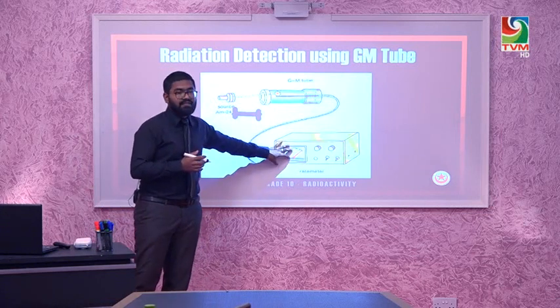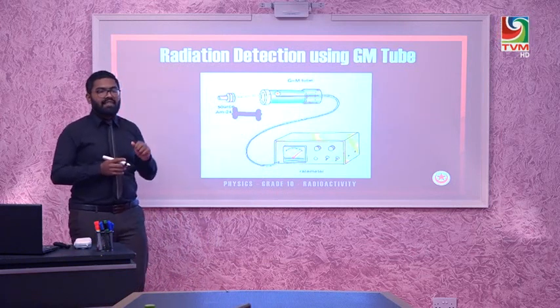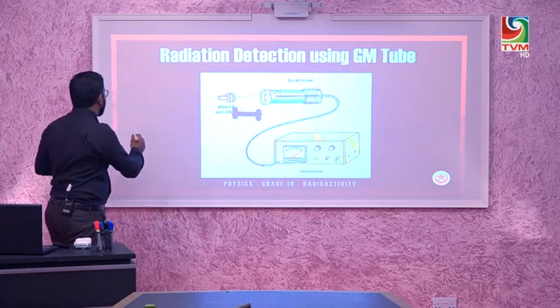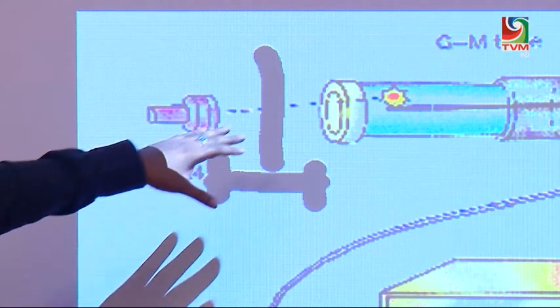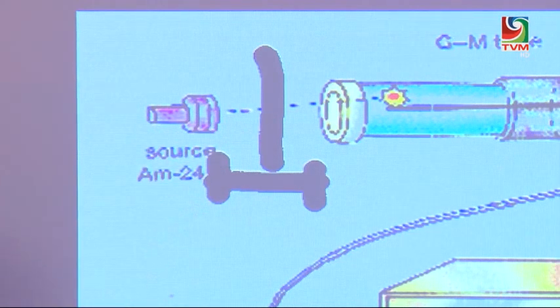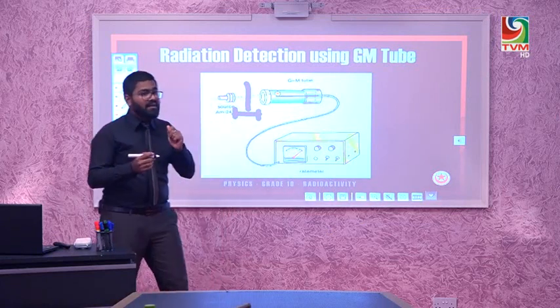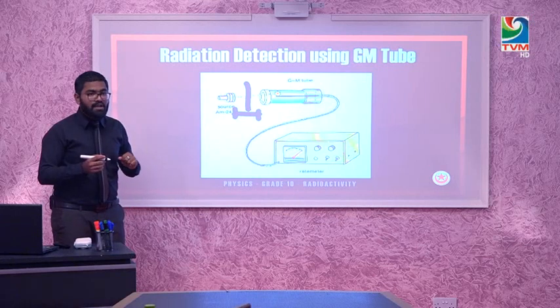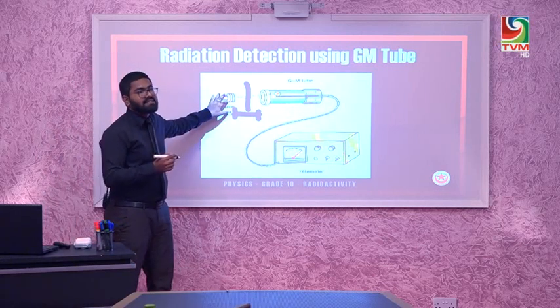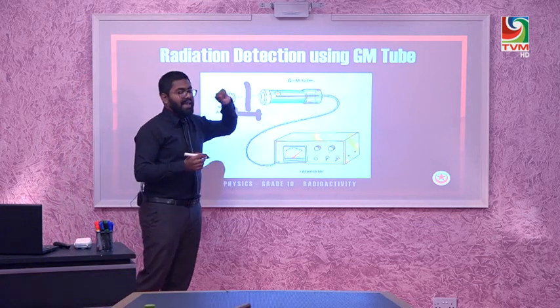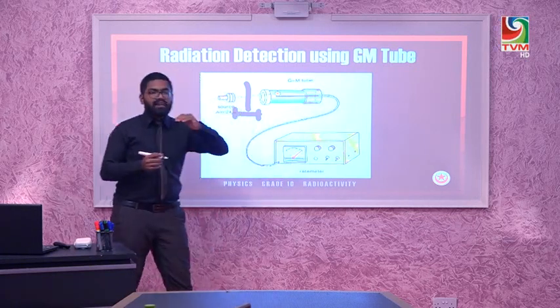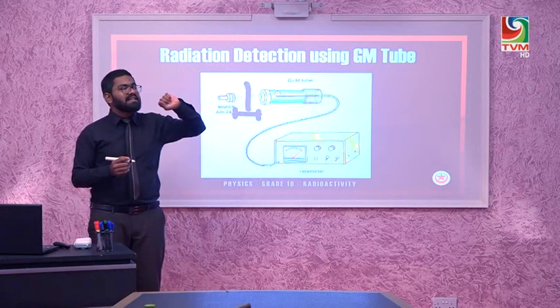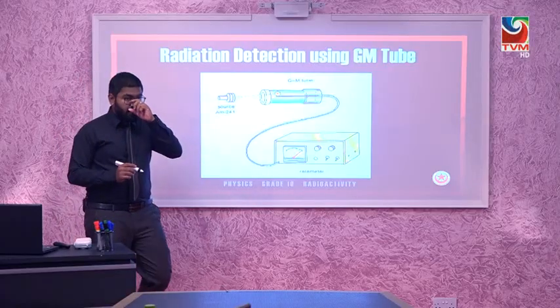To check if alpha radiation is being emitted, place a thin sheet of paper between the radioactive source and the GM tube. A thin sheet of paper will stop all alpha particles. If the radioactive source is emitting alpha particles, the thin sheet of paper will block them and the value at the rate meter will reduce.